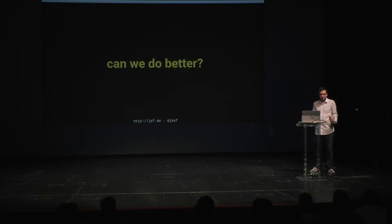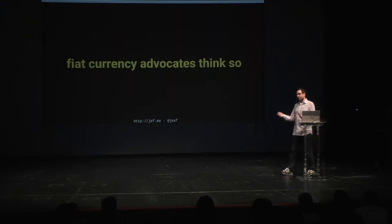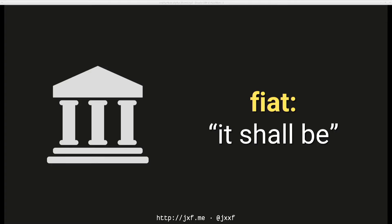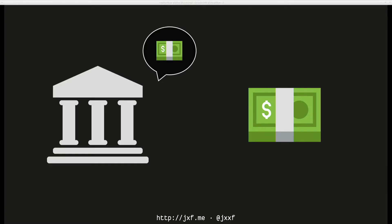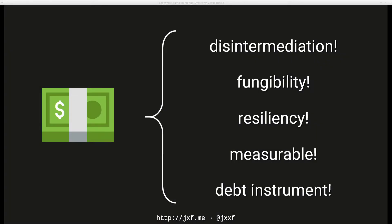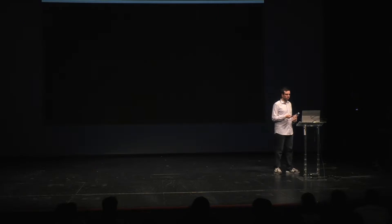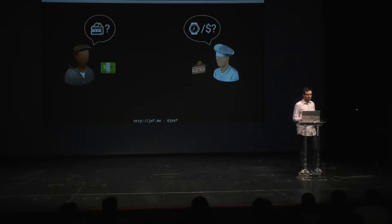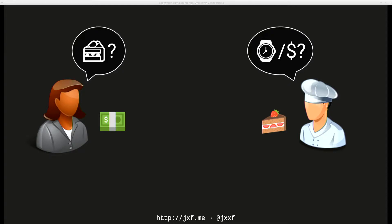People who are advocates of fiat currency think we can do better. Fiat is a Latin word meaning 'it shall be' — the state, government, or central bank produces the money just because it can. Paper money has all of those properties in a higher degree than steak dinners. Now Alice doesn't need to have the thing Bob wants; Bob will accept money because he knows he can later spend it to buy a watch himself.